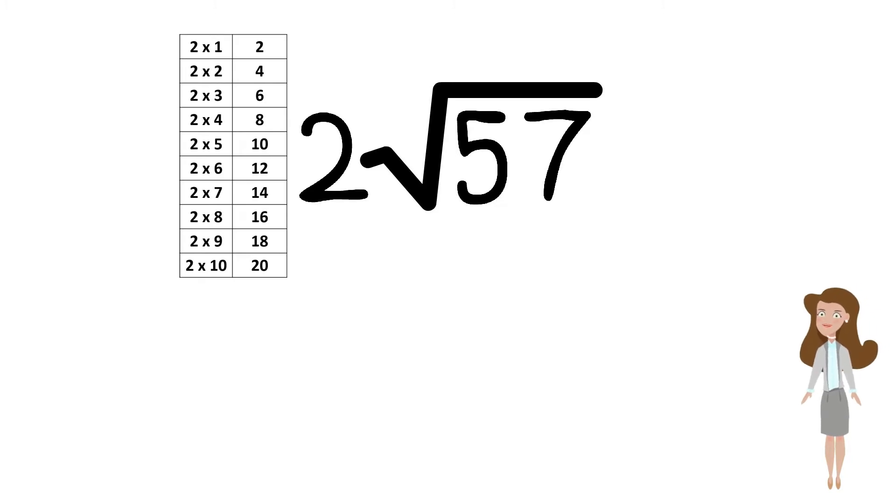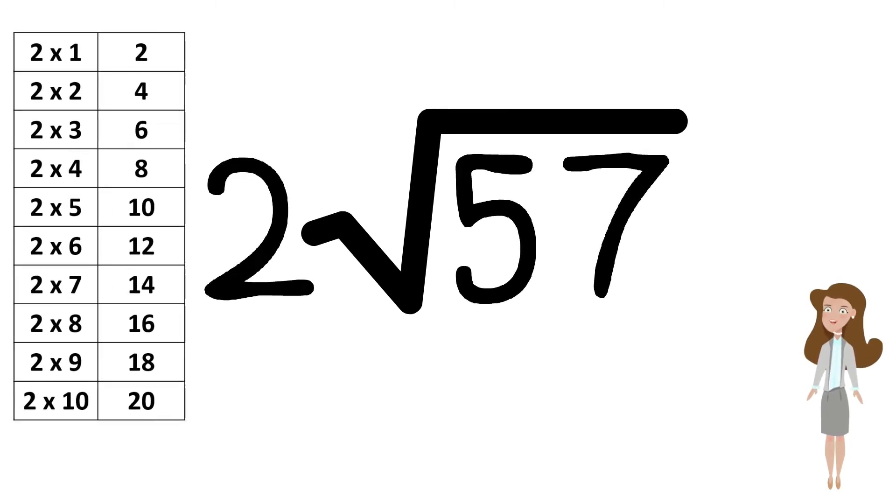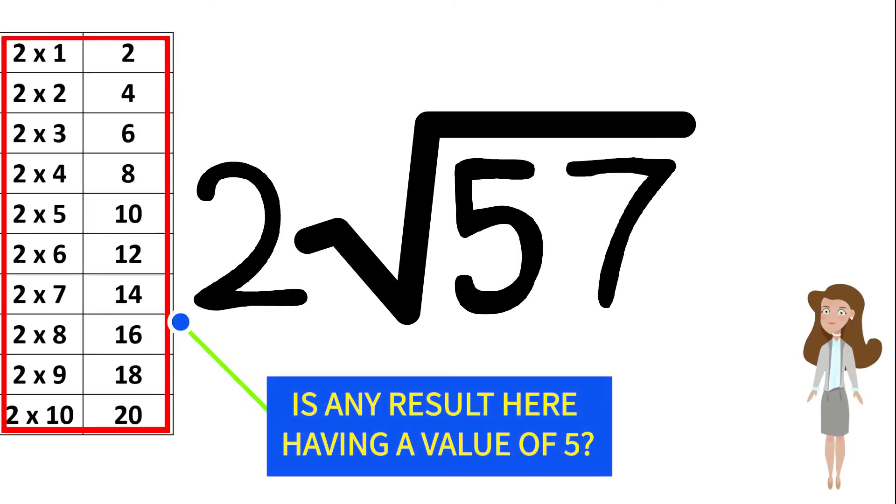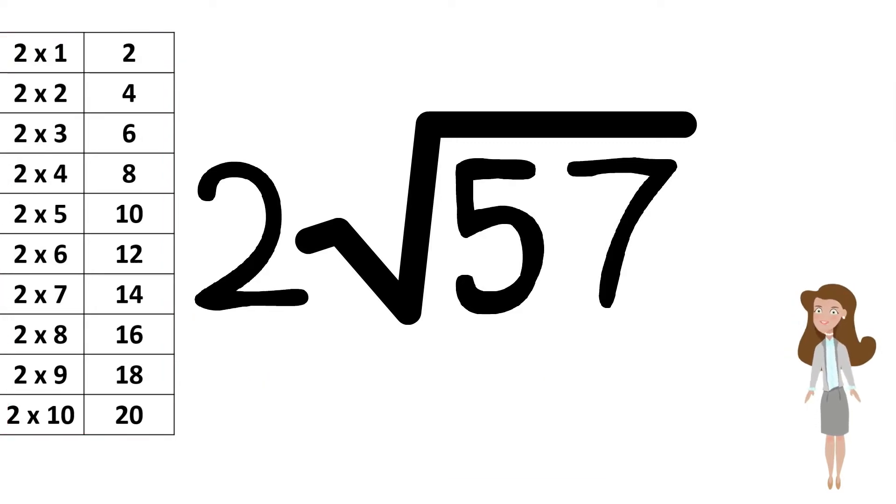The first digit in the number 57 is 5. We must now look at the table and see if any of the result is 5. We can see that none of the results in the 2 times table is 5.